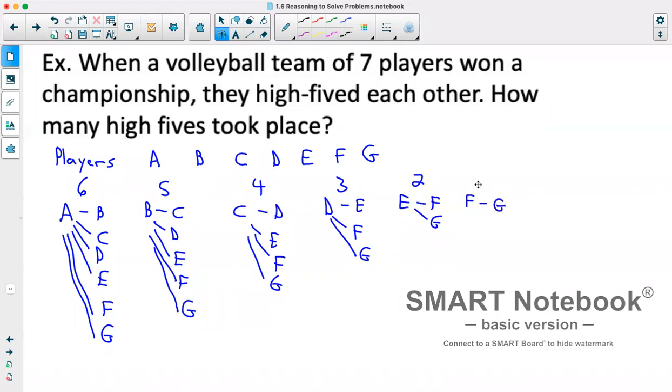So they only have G to high-five. Now G has already high-fived everyone. So adding this up, we've got 6 plus 5 is 11, plus 4 is 15, plus 3 is 18, plus 2 is 20, plus 1 is 21. So 21 high-fives total.